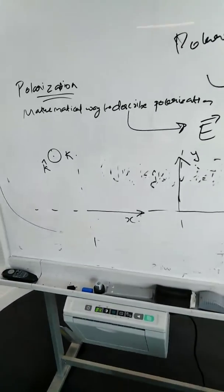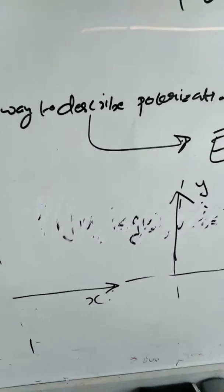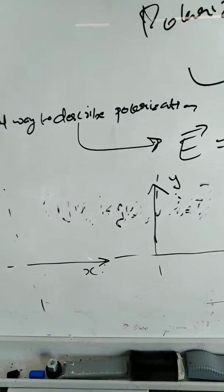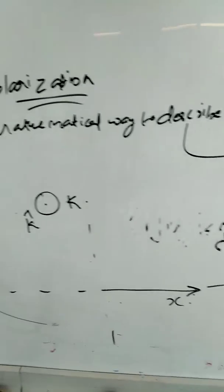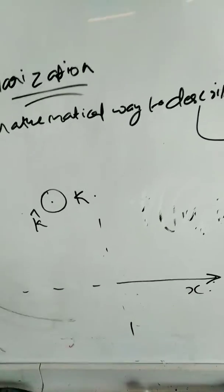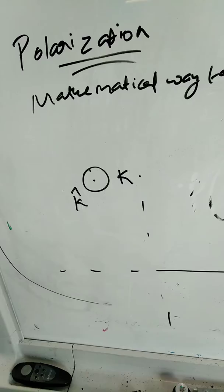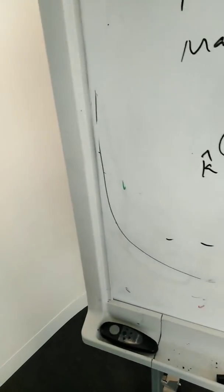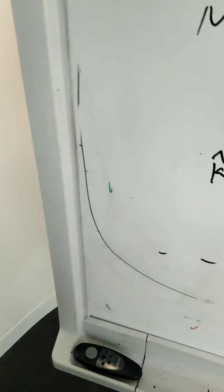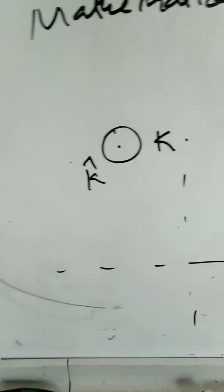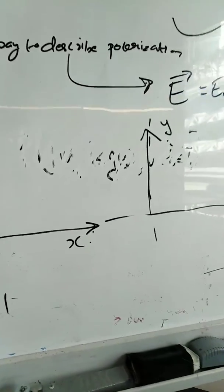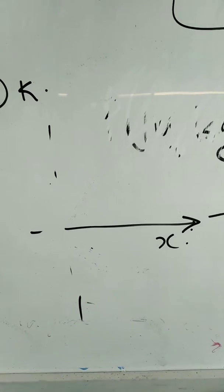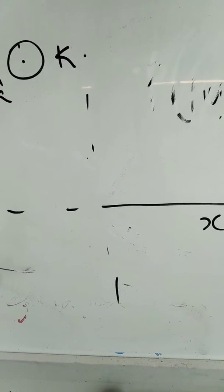So today we are going to talk about the mathematical way to describe polarization. Let's assume that there is a bunch of bundle of plane waves coming out from the board. Let's represent it as K and the direction is along K hat.